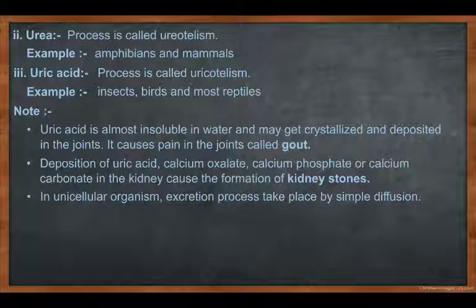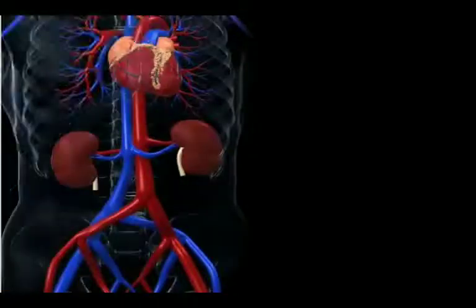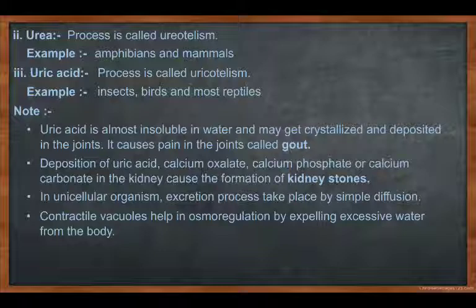In unicellular organisms, the excretion process takes place by simple diffusion. There are also contractile vacuoles — as I told you in part 3 with the amoeba diagram — there are many vacuoles present, one of which is the contractile vacuole. The contractile vacuole helps in the removal of excess water from the body, so it also helps in excretion. That is all for today.